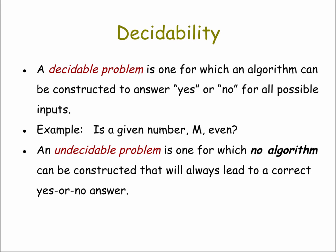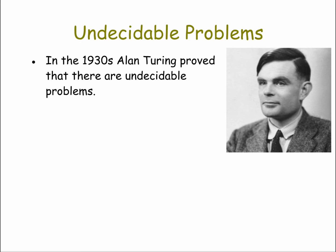An undecidable problem, by contrast, is one for which no algorithm can be constructed that will always lead to a correct yes or no answer. This is a highly theoretical area of computer science research, so we're not going to go into details. But we do want you to know that in the 1930s, Alan Turing — one of the first and most famous computer scientists — proved that there are undecidable problems.